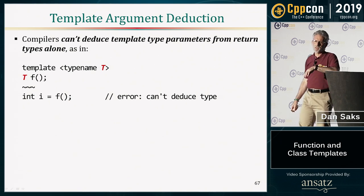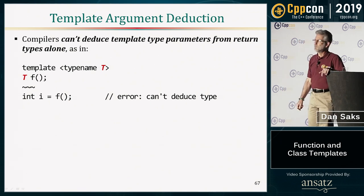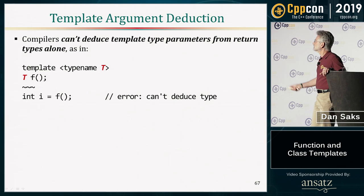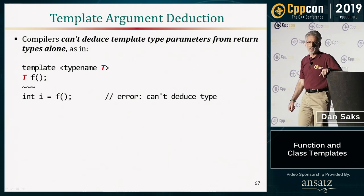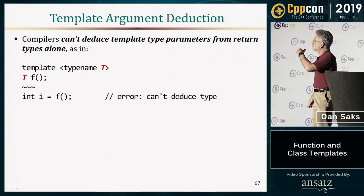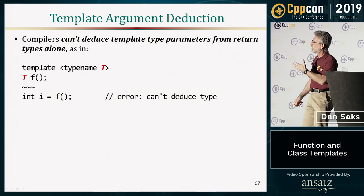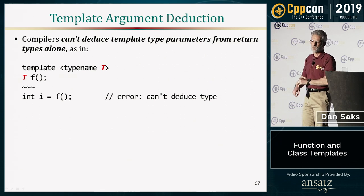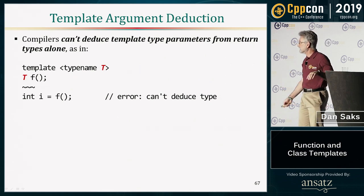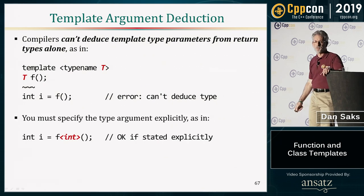There are situations where deduction can't happen. For example, deduction only works on function arguments, not on return type. If a function template f has an empty parameter list and a return type of T, it won't deduce from context that you want it to return an int — you have to explicitly provide the angle-bracketed int for that to compile.